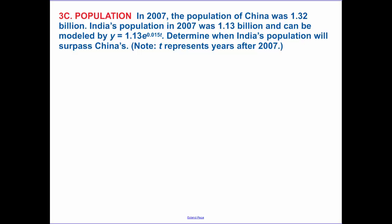Now this is part C of this. In 2007, the population of China was 1.32 billion. India's population in 2007 was 1.13 billion and can be modeled by y equals 1.13e to the 0.015t. We want to know when India's will surpass China's. So when India's population is going to be greater than China. Now our China equation, t represents years after 2007. So therefore our initial amount changes to 1.32. That was our population in 2007. And we can assume that we can use that same growth constant.